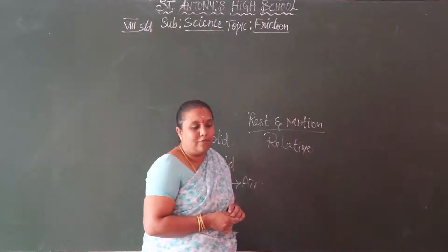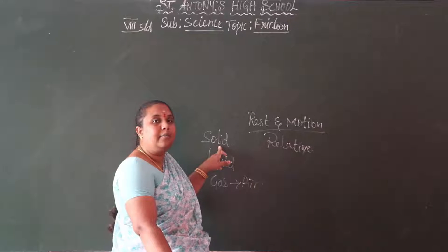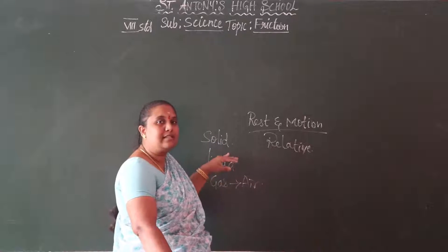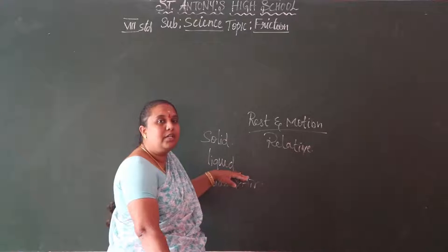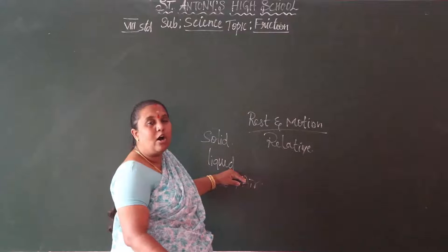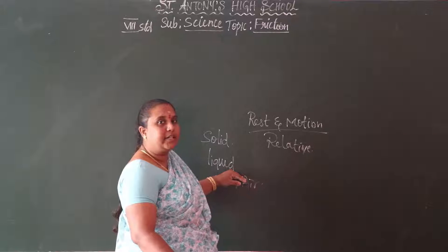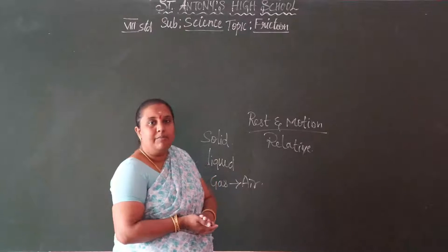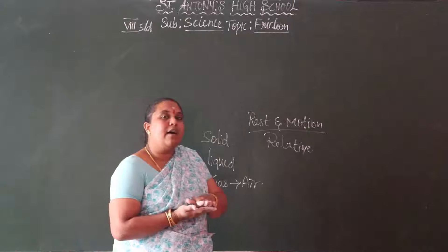Let us take one example. Solid — a ball moving on the ground. That is the example for solid. And liquid — we are pouring water in a glass and then pouring kerosene or petrol or any other oily liquid on the water. Oil and water don't mix. Why? Because the density of oil is less than water. So it also has friction.